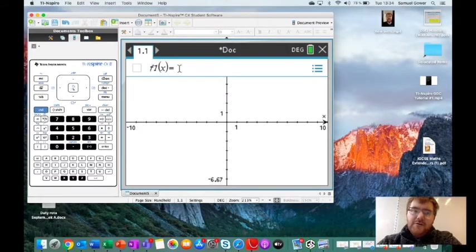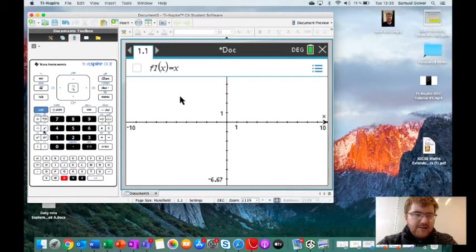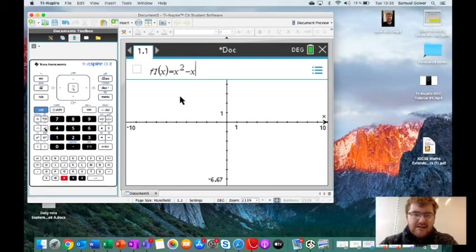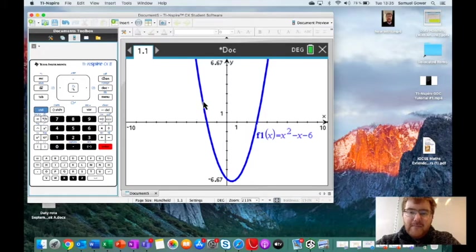It loads this up ready to write in your function. You can write in any quadratic, linear, cubic functions. Let's write in a function using the x button down here: x squared minus x minus 6. We'll start with a quadratic and you'll get a nice picture here.